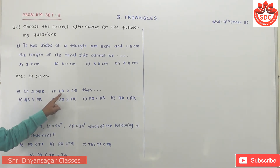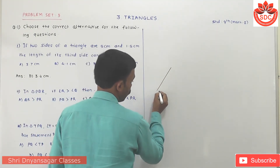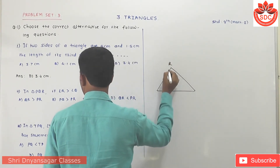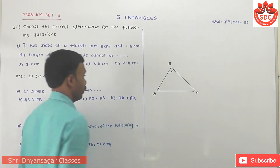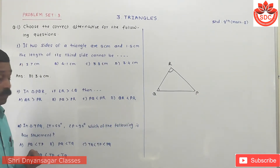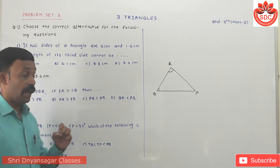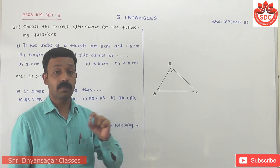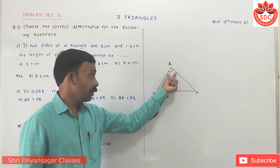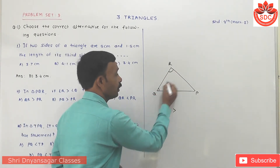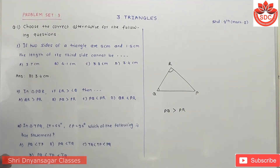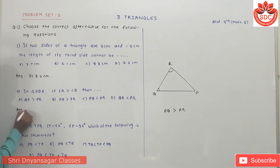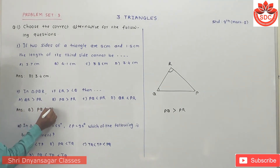Second question: in triangle PQR, angle R is greater than angle Q. Which relation is true? I'll draw this triangle — angle R is greater than angle Q. You know that the side opposite to the greater angle is greater than the side opposite to the smaller angle. So the side opposite to angle R, which is PQ, is greater than the side opposite to angle Q, which is PR. Answer is B: PQ is greater than PR.